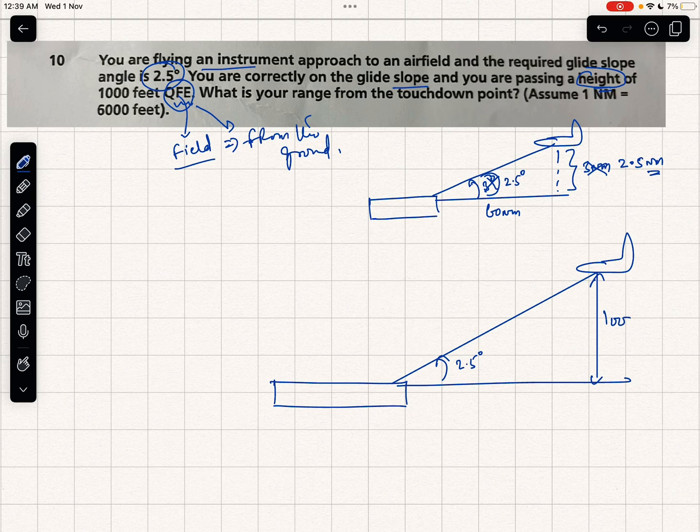This is 1000 feet, assuming one nautical mile equals 6000 feet. What is the range? For example, if this is 60 nautical miles, this would have been 2.5 nautical miles.